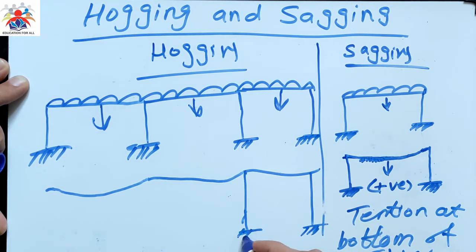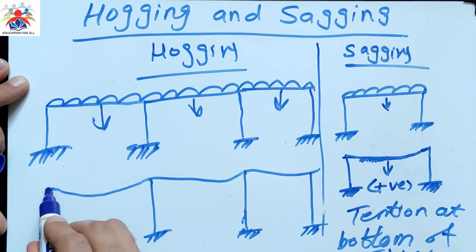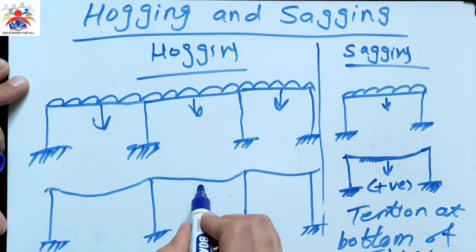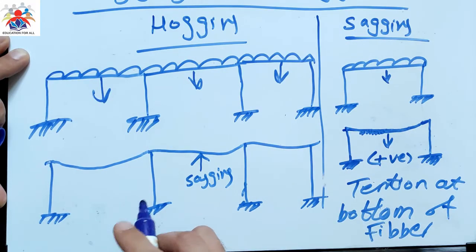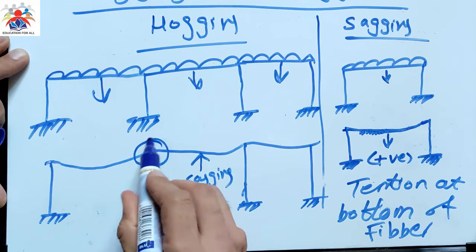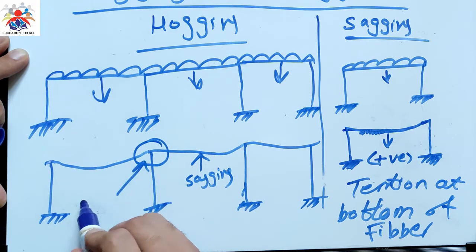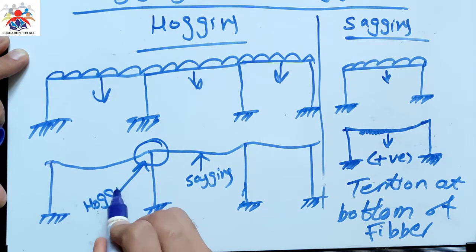So here you can see this part is, as I have said, it's sagging because we have tension at the bottom of fibers. But this part is hogging. This part is hogging.